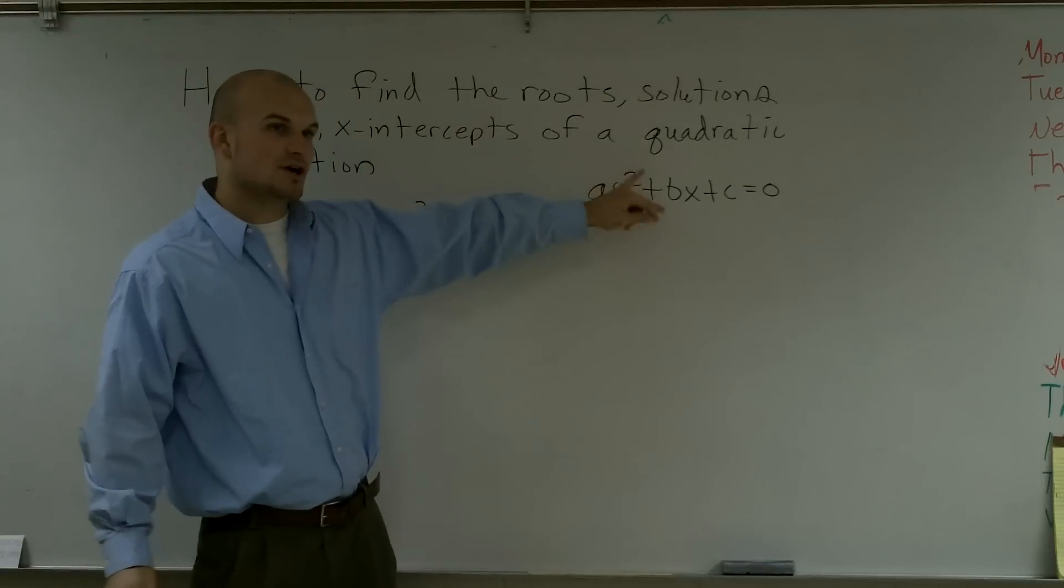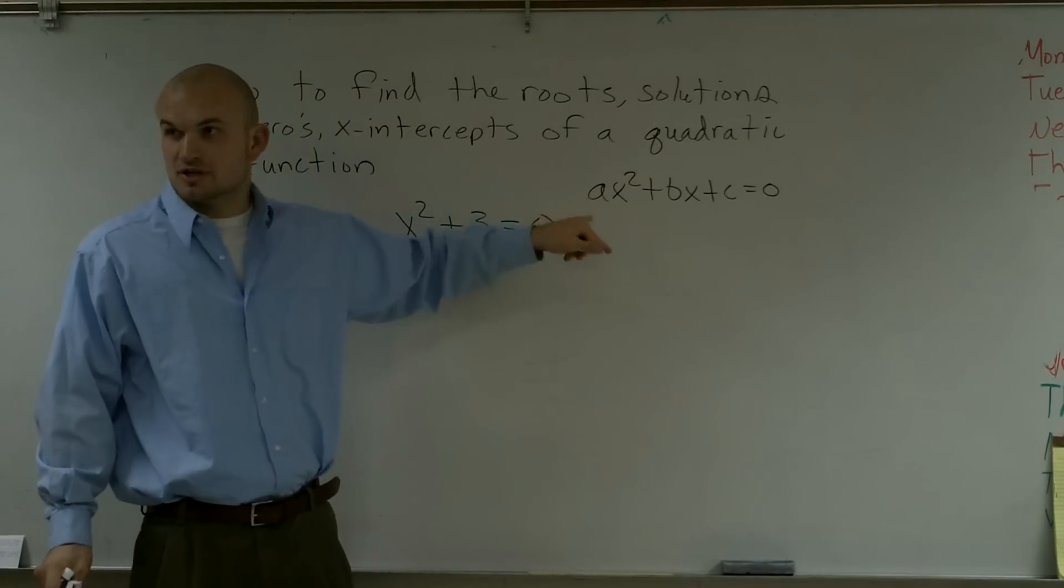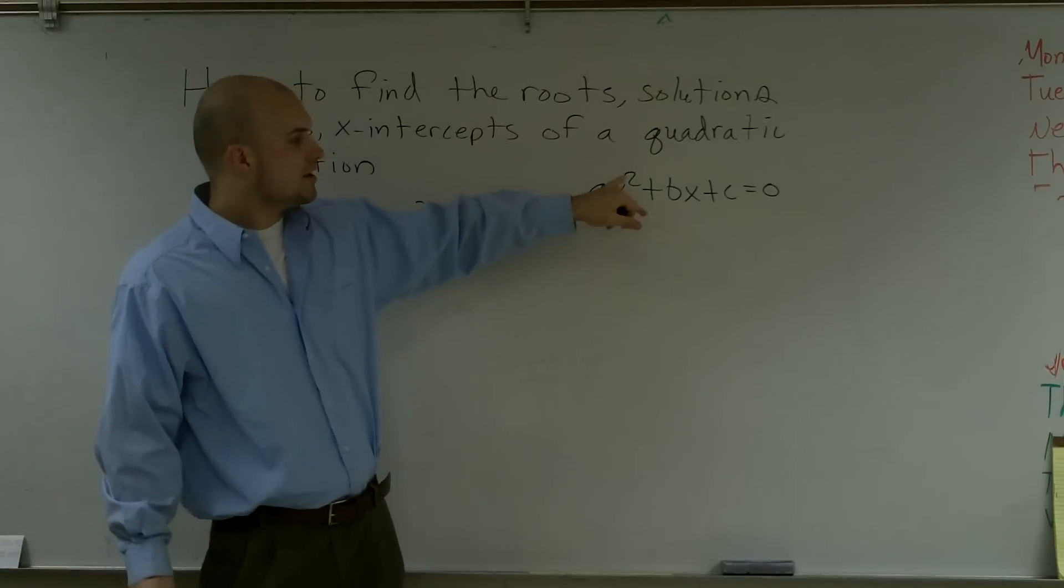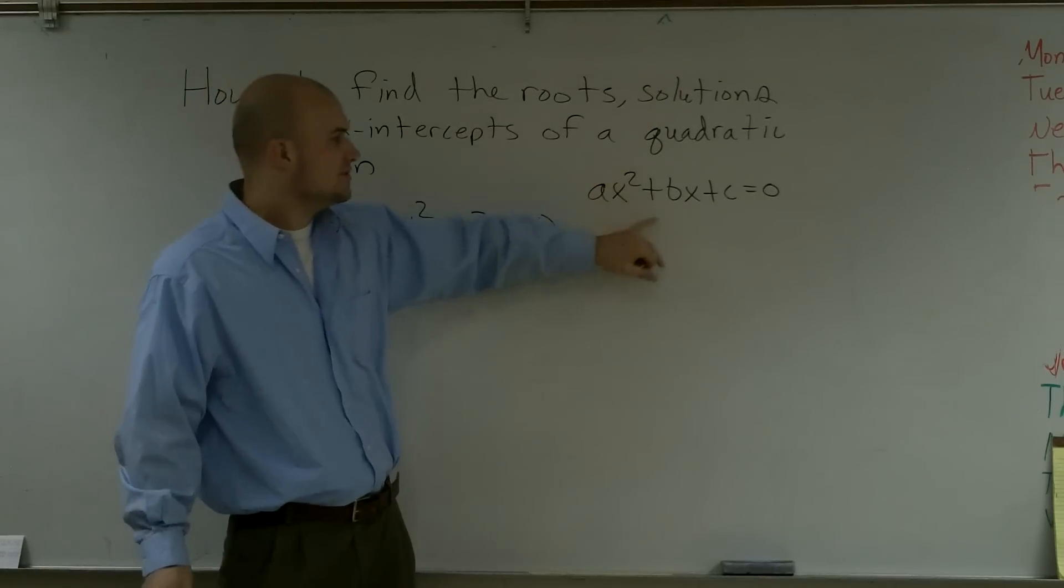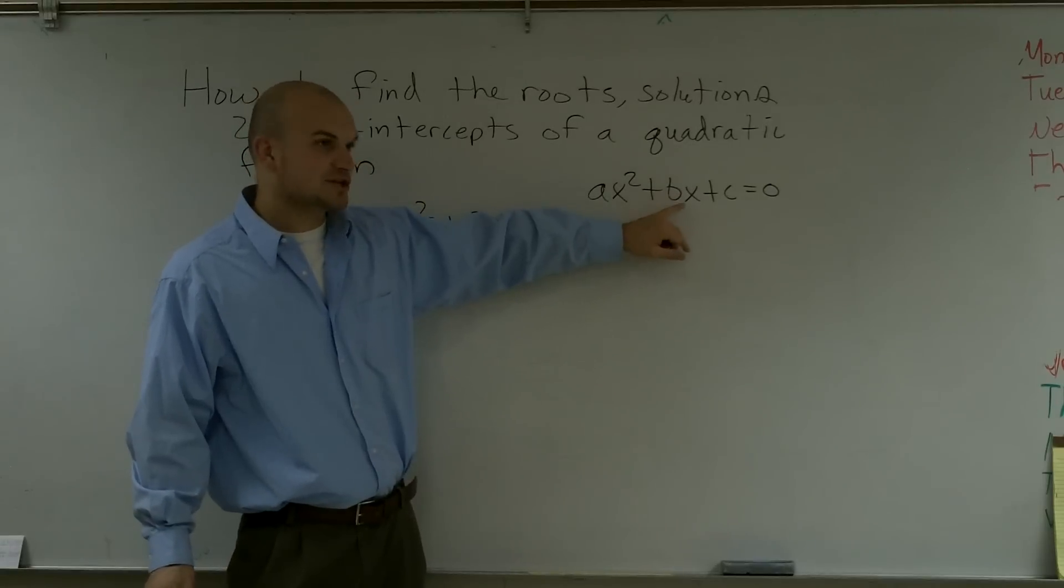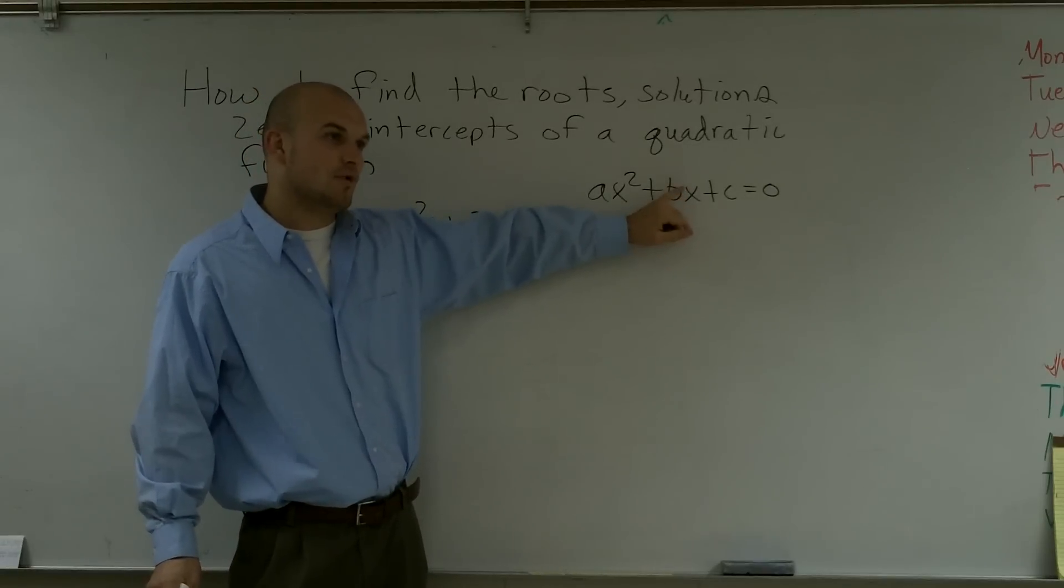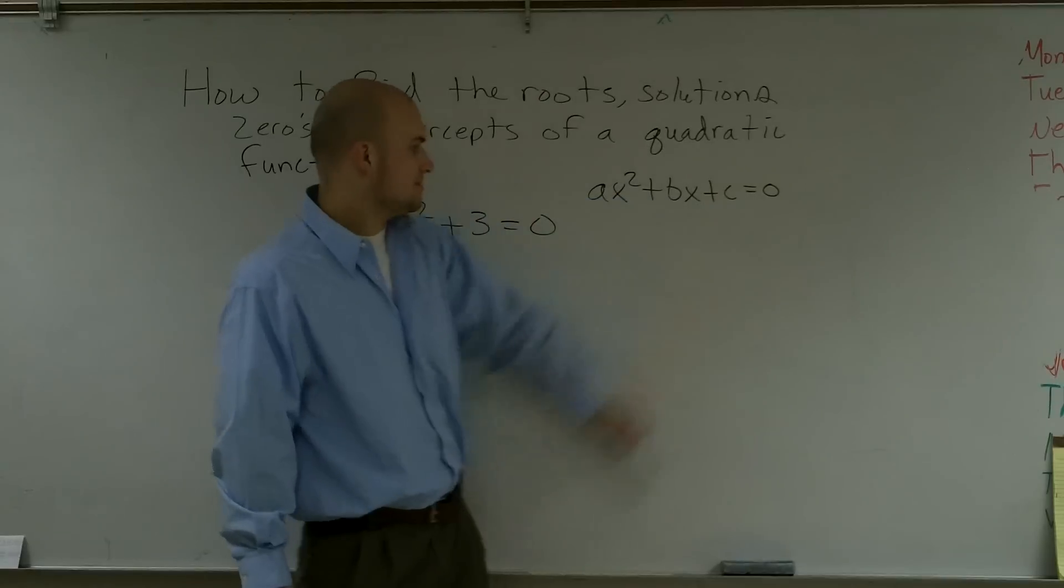And remember, this is our quadratic term, so a is always the coefficient of your quadratic term, or sorry, your exponent of 2. Here is your linear term, because the x has an exponent of 1, and here is your constant term.